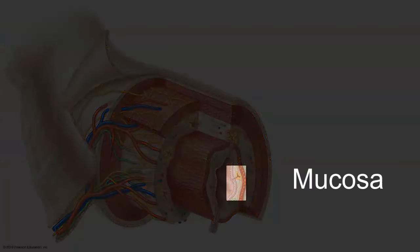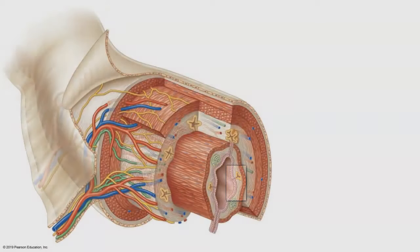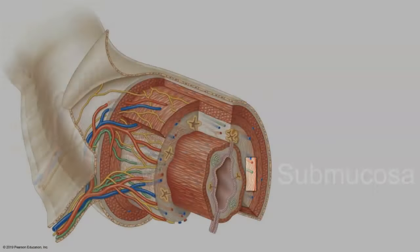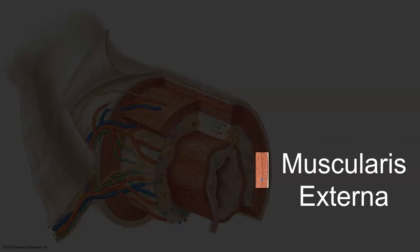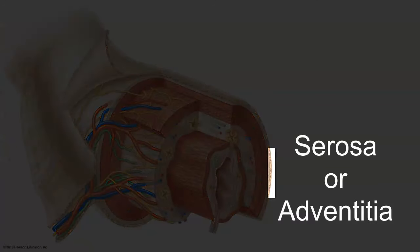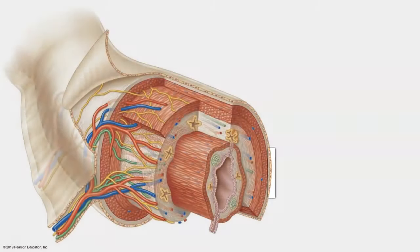The mucosa is the innermost portion — that's the region that would be touching the lumen. Deep to that is a region called the submucosa. Deep to that is a muscular layer called the muscularis externa. And then the outer periphery of the GI tract is encased by a sheet of connective tissue. So let's take a look at each of these layers one by one.